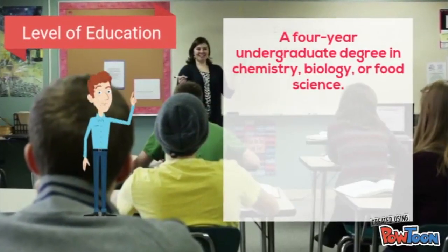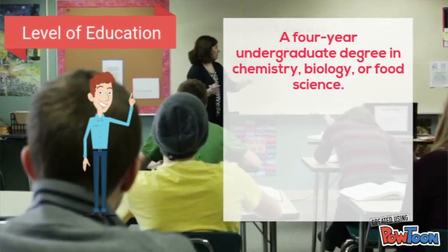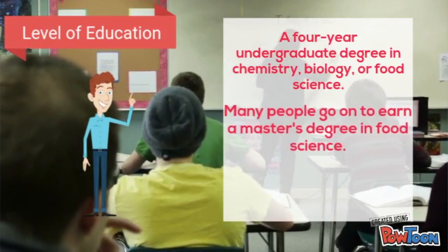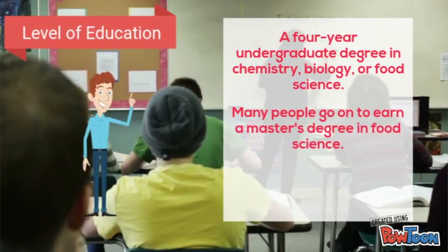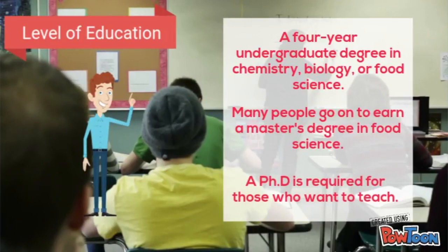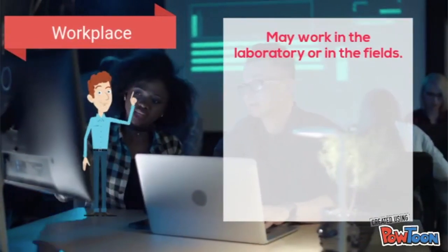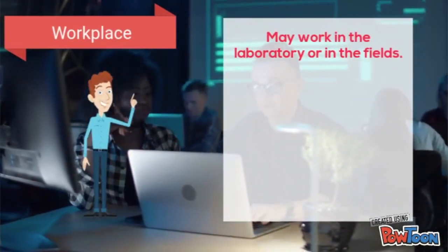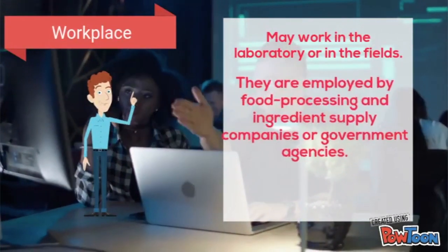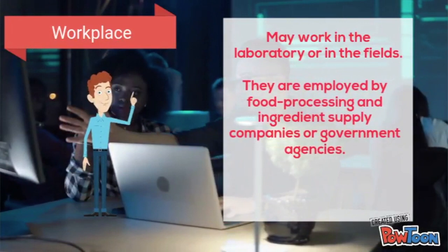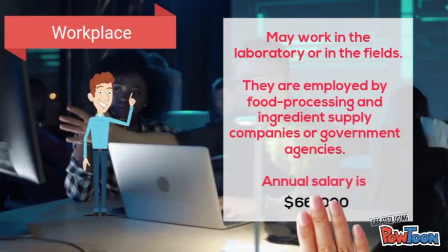The level of education required to work in this field: a four-year undergraduate degree in chemistry, biology, or food science is required. Many people go on to earn a master's degree in food science. A PhD is required for those who want to teach. Agricultural chemists work in a laboratory or in the fields. They are employed by food processing and ingredient supply companies or government agencies, and their average salary is approximately $66,000.